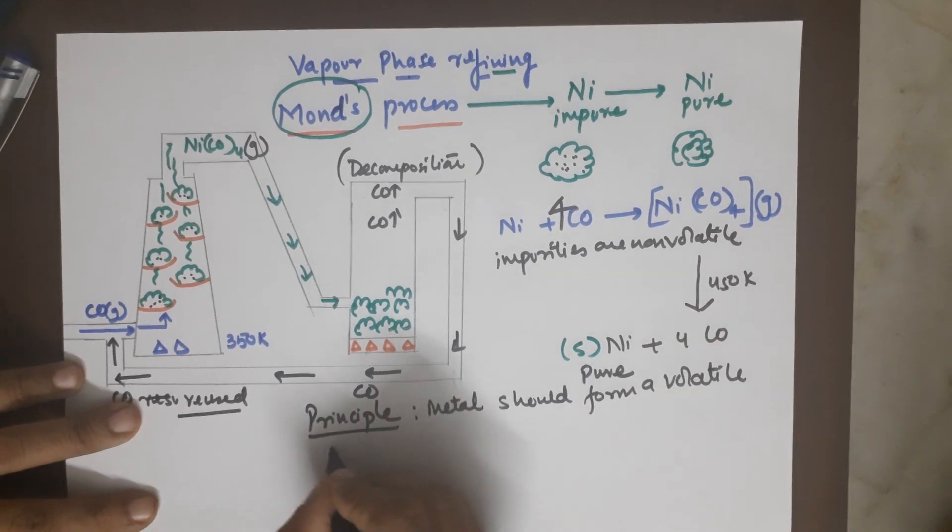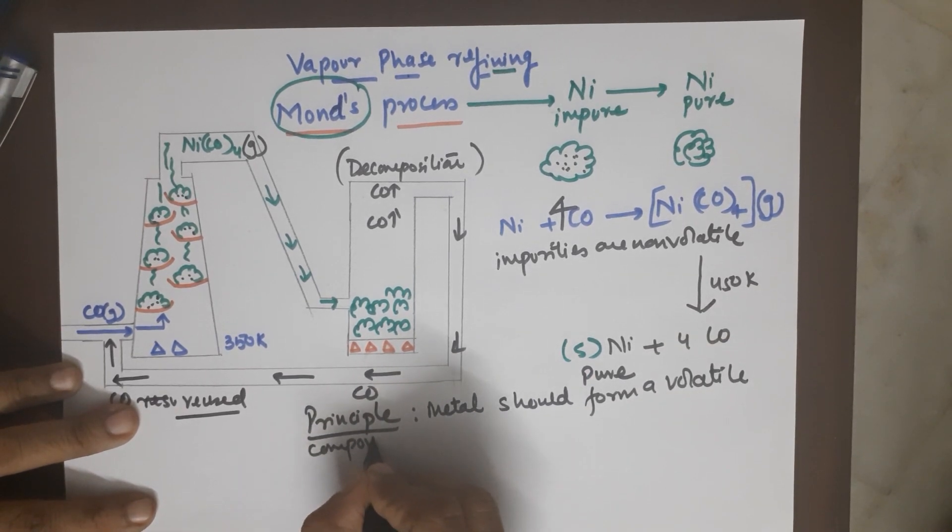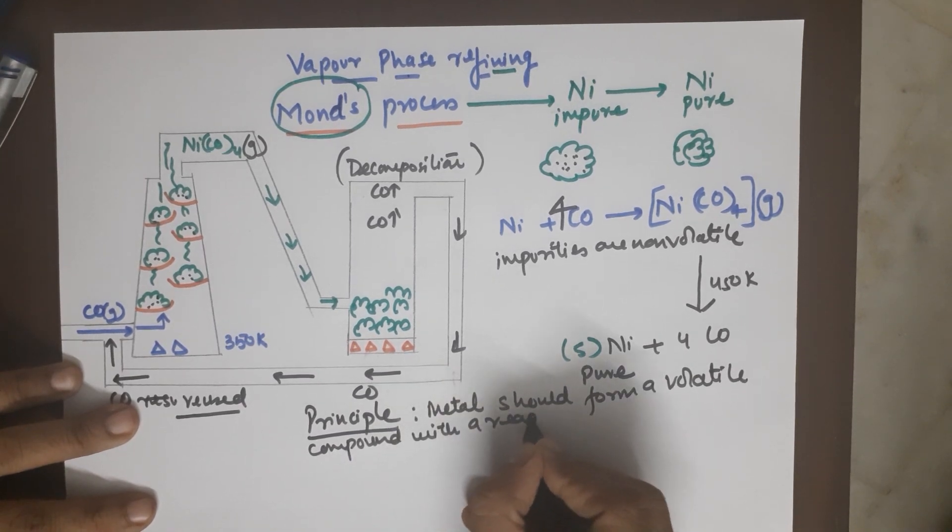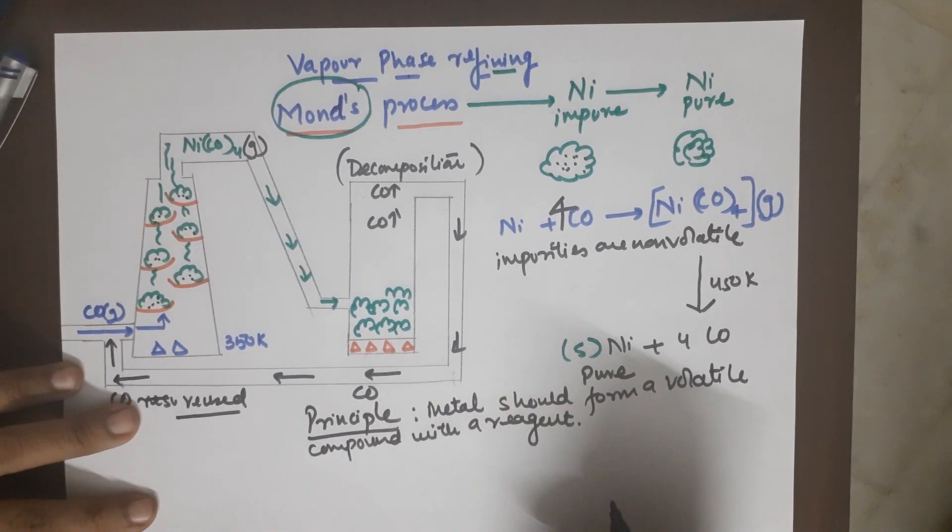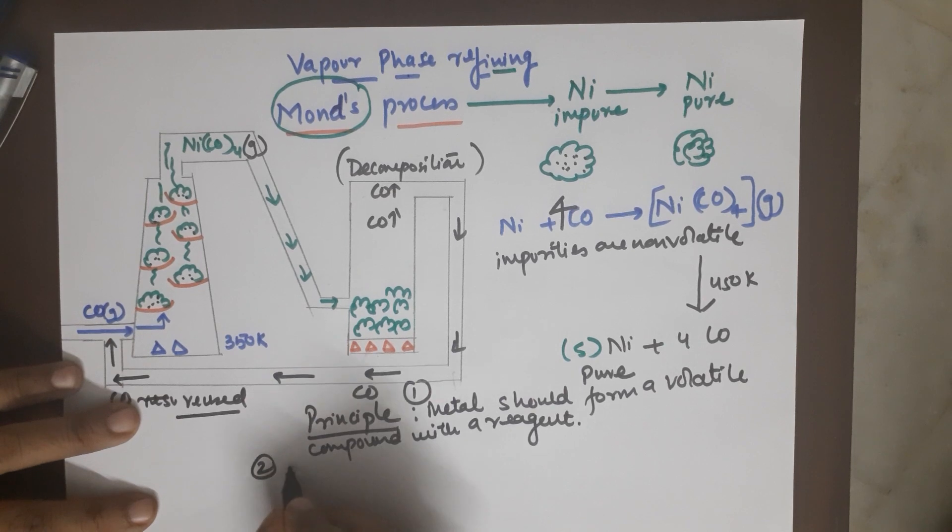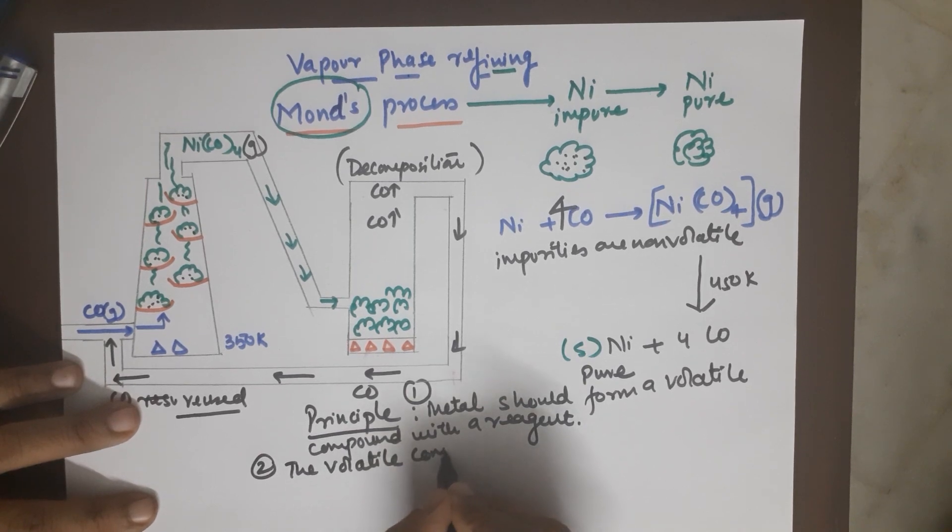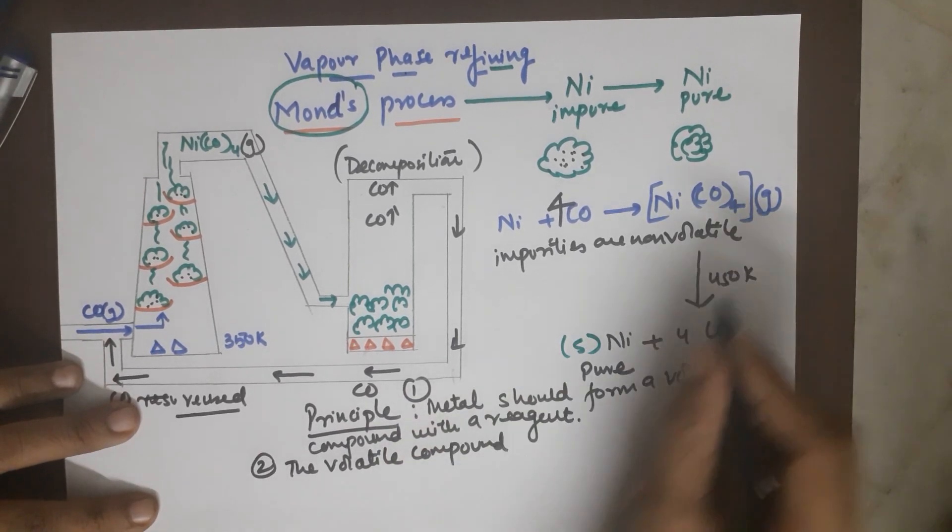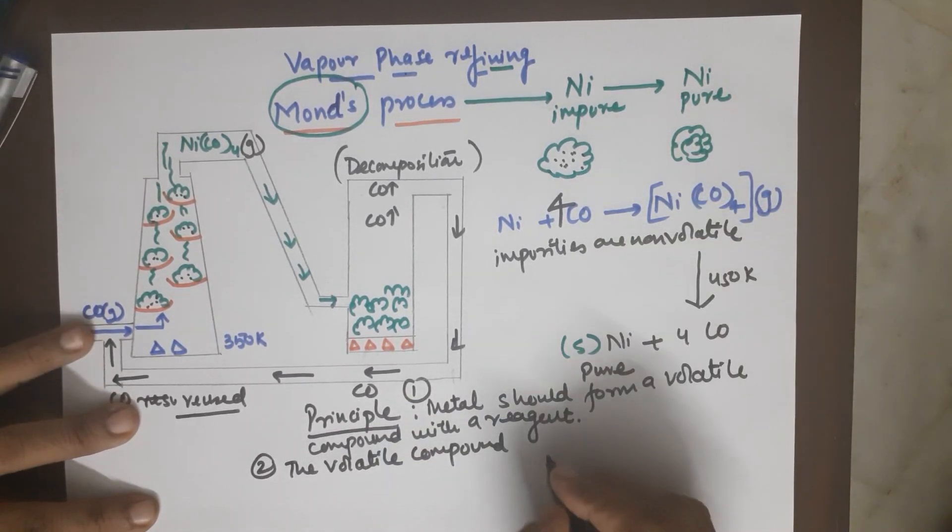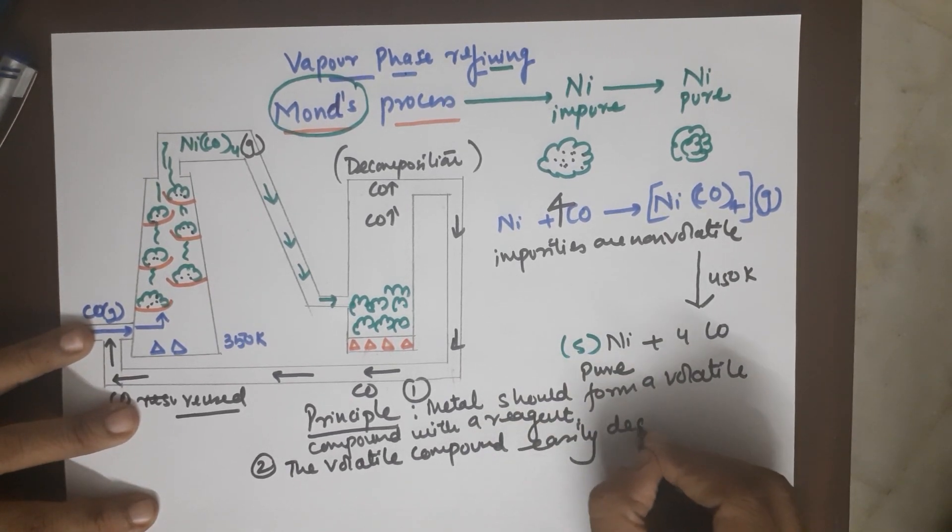So the agenda is the metal or the element should form a volatile compound with a reagent. Now this reagent should not be too expensive, otherwise the cost of purification would be very high.